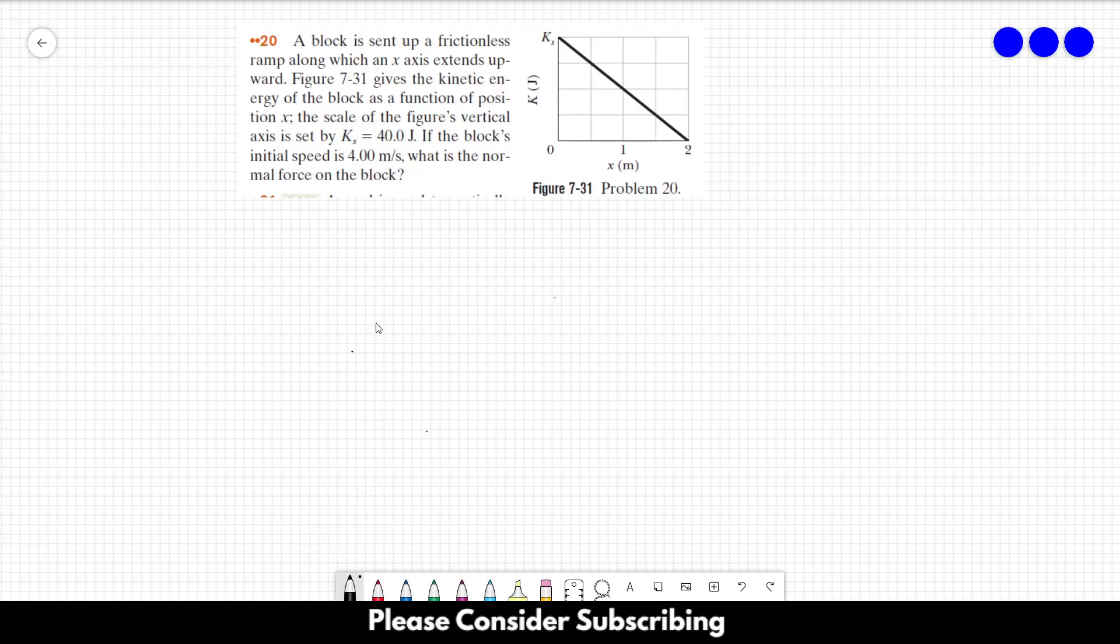Number 20! A block is sent up a frictionless ramp along which an x-axis extends upward. This figure here gives the kinetic energy of the block as a function of position X. The scale of the figure's vertical axis is set by Ks equals 40 Joules. If the block's initial speed is 4 meters per second, what is the normal force on the block?